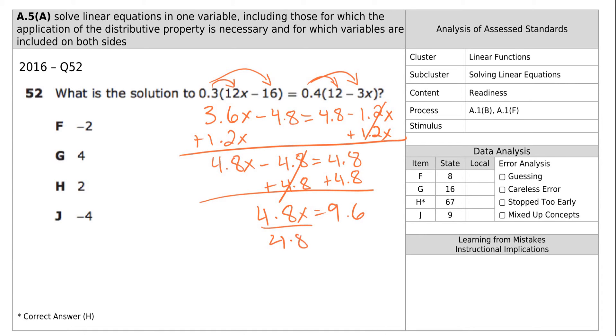We need to get rid of whatever's being added or subtracted first. In this case, it would be plus 4.8 to get rid of that negative 4.8. 4.8x is equal to 9.6. Divide by 4.8, divide by 4.8. When you divide by 4.8, you get 2. So the answer is H.